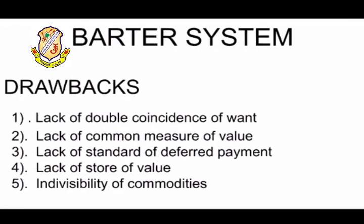The third drawback of barter system is lack of standard of deferred payment. In barter system, when we exchange goods for another good and want to pay in a future contract, it is not easy to calculate what the payment could be — the exchange of quality and quantity of goods in the near future. For example, if we buy something today and want to exchange another good after a period of time, the quality and quantity of certain goods may have varied or changed. So that is again a big drawback of the barter system.